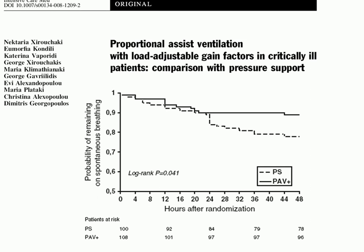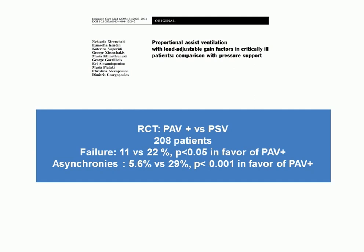In this large study of 208 patients, the failure rate at 24 hours was twice as high for pressure support: two times more patients failed pressure support than PAV. Only 10% of patients failed PAV, meaning 90% switched to PAV early on and were still on it at 48 hours. The asynchrony index was almost zero with PAV. It's a very attractive result with good physiological data and an interesting clinical outcome.